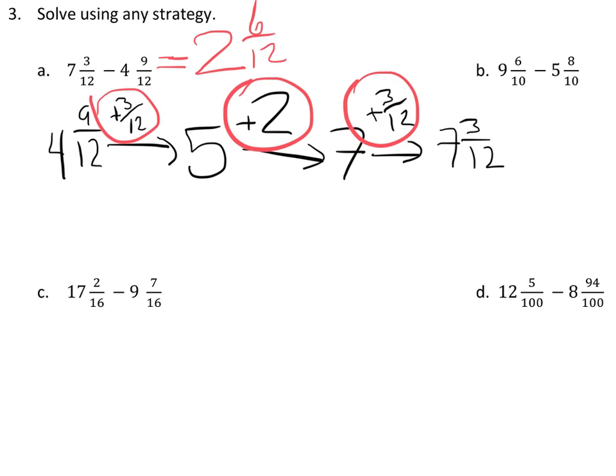The arrow method is really great for fractions, especially like C and D, because we're talking about sixteenths and hundredths. We definitely do not want to draw these on number lines. So let's try it one more time. I'm going to have nine and seven-sixteenths. I want to get all the way to seventeen and two-sixteenths.